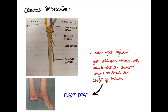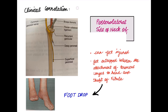For the clinical correlation of the common peroneal nerve: in its course it runs on the lateral border of the shaft of fibula. It can get injured at the posterolateral side of the neck of fibula, and can get entrapped between the attachment of peroneus longus to the head and shaft of fibula. This leads to foot drop.